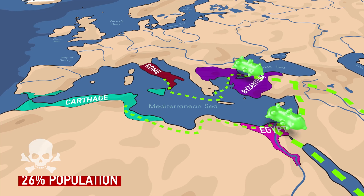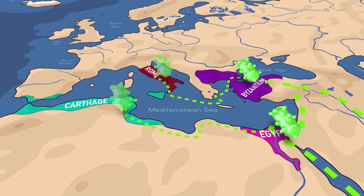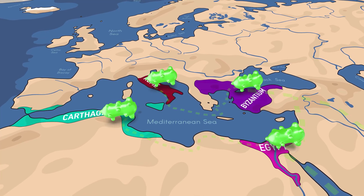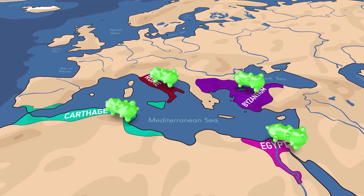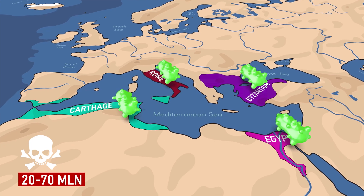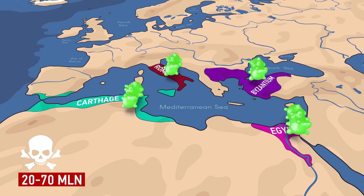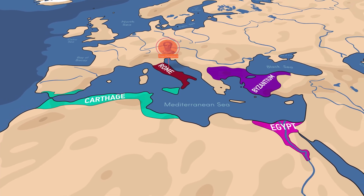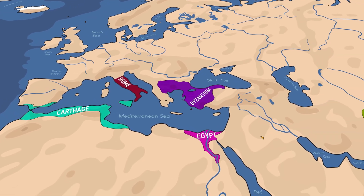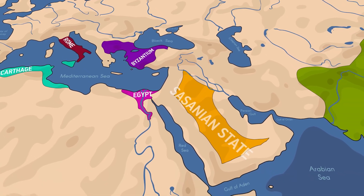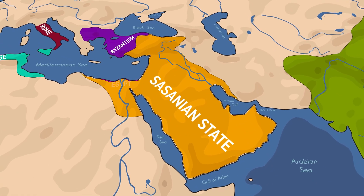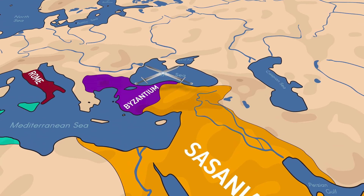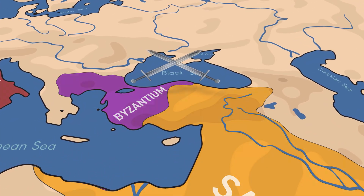Over time, the disease spread throughout the Mediterranean and Western Europe, where outbreaks continued until the early 8th century. The total number of casualties is estimated at between 20 and 70 million. The plague spared no one — even Pope Pelagius II died from it. This epidemic significantly weakened the eastern provinces of Byzantium and the Sassanian state. In the 7th century, the Arabs took advantage of this by conquering the Sassanid Kingdom and the devastated Byzantine provinces.